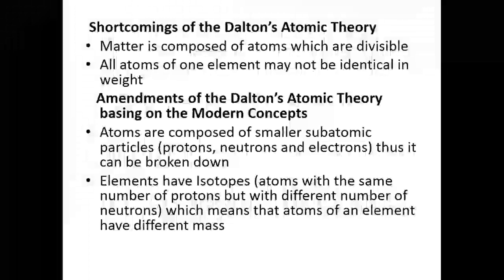After Thomson discovered electrons, Rutherford came and found that where the electrons were, there was also a positive charge in the empty space. Rutherford then discovered protons. However, J.J. Thomson could not explain how the masses of electrons and protons, though close, didn't match. Then came Chadwick, who discovered neutrons — the neutral particles in that empty space. These different scientists discovered protons, neutrons, and electrons, showing that the atom can be broken down. Also, because of isotopes — atoms with the same number of protons but different numbers of neutrons — Dalton's idea that all atoms of an element are identical in weight was revised.